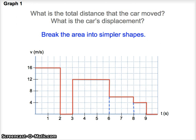So now we have four rectangles that we need to consider. And just looking at a very simple base times height, 16 times 2 is 32, 12 times 3 is 36, 6 times 2 is 12 meters, and then 4 times 1. And then to find the total distance traveled, or the total displacement, we would just need to add all of those values up to get 84 meters.